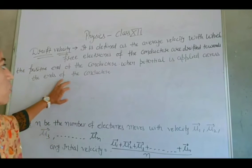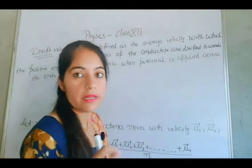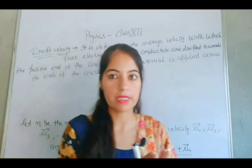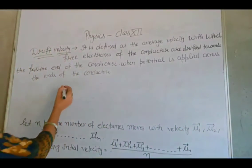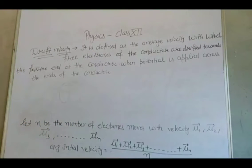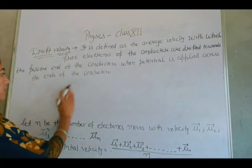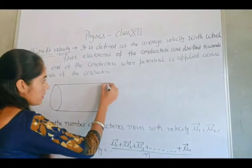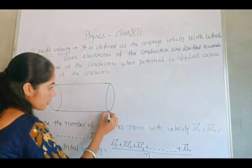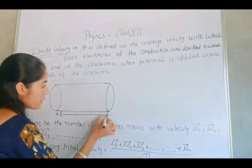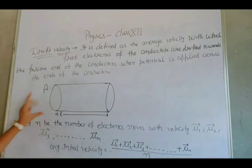When potential is applied across the ends of the conductor — ab electricity ki baat ho rahi hai, toh usme obviously hum electrons ke flow ki baat karenge. Let us take a conductor of length L and area of cross section A.